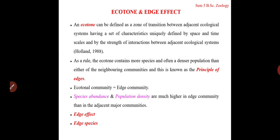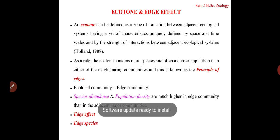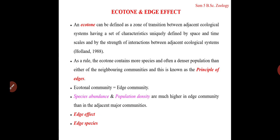As a rule, the ecotone contains more species — species abundance is high — and often a denser population is seen than in either of the neighboring communities. This is known as the principle of edges. An edge is this transition zone between two different communities. The principle of edges states that the ecotonal community has much greater species abundance and much higher population density than the adjacent or neighboring communities.